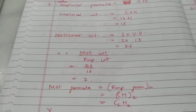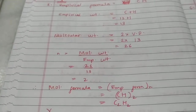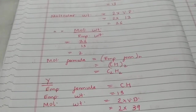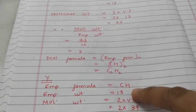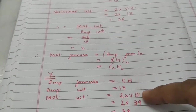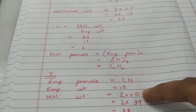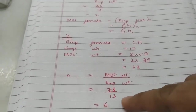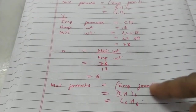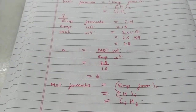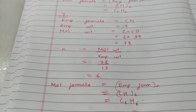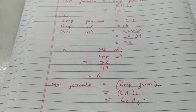The second part is similar. For compound Y, empirical formula and empirical weight are the same. Molecular weight = 2 × vapor density = 2 × 39 = 78. n = 78 ÷ 13 = 6. Six times the empirical formula gives the molecular formula C6H6, which could be benzene — a closed-chain organic compound.